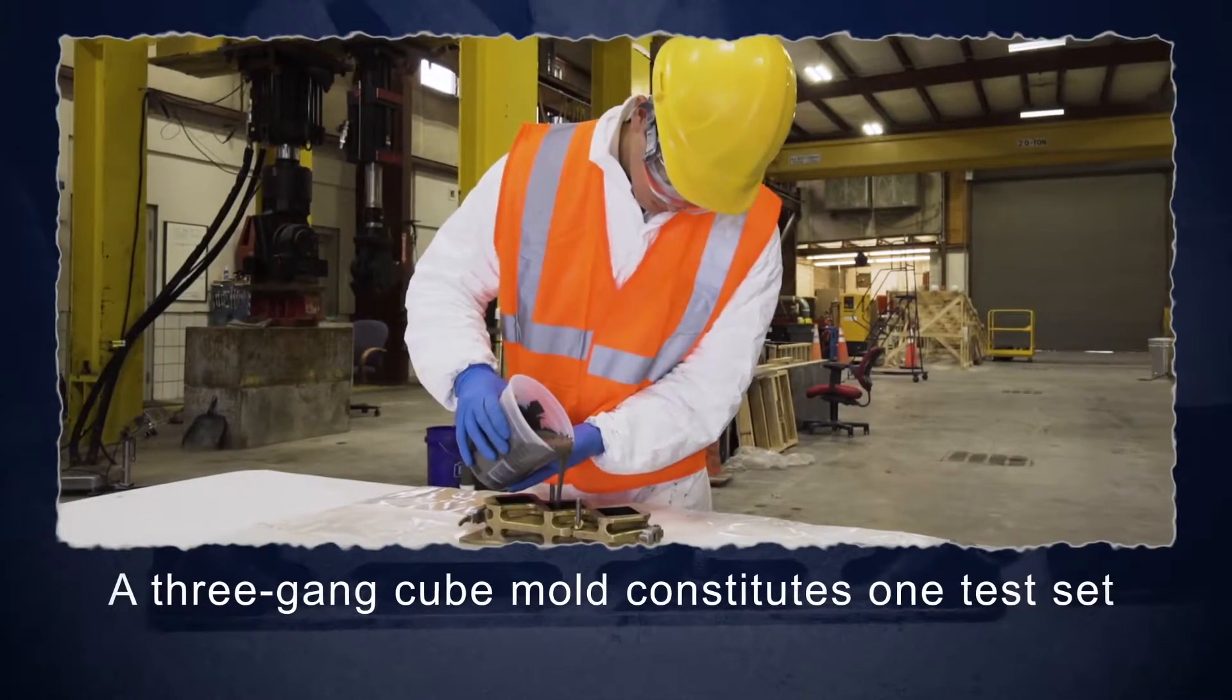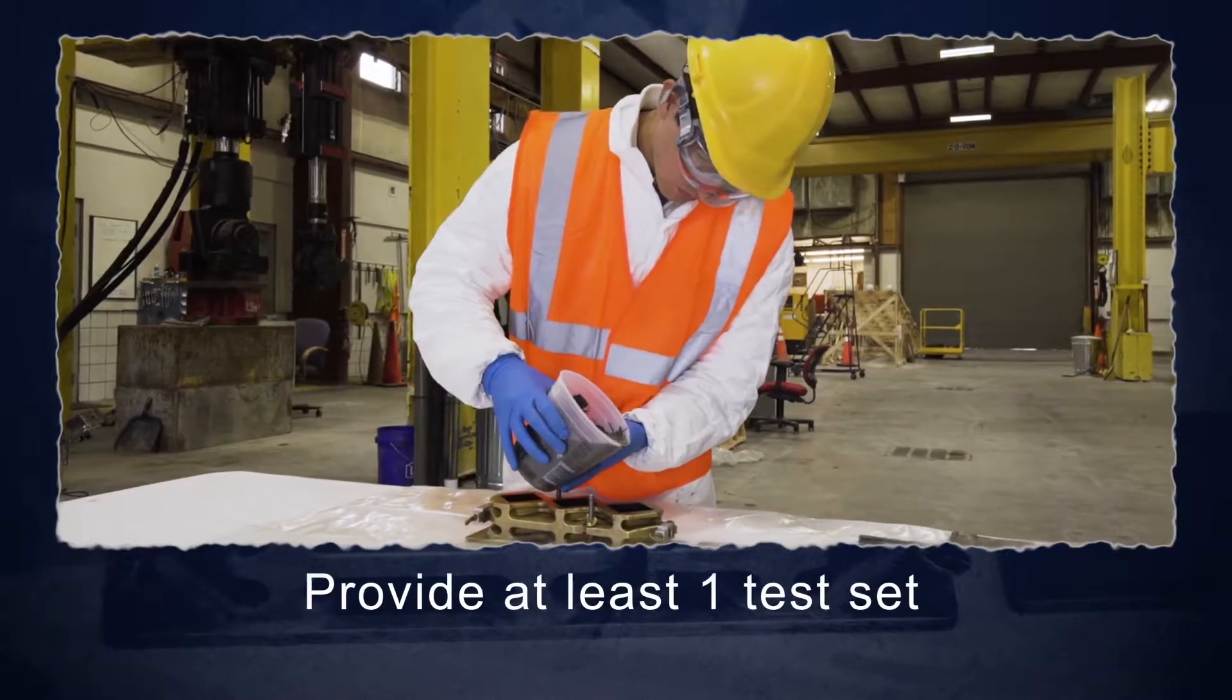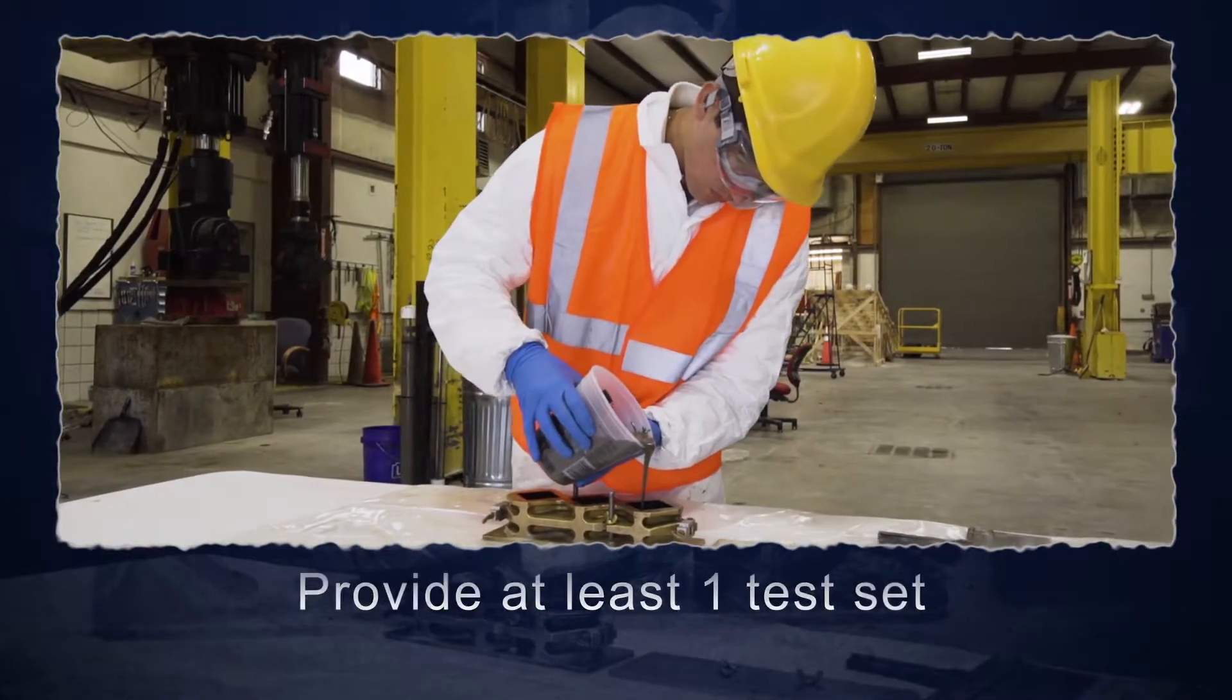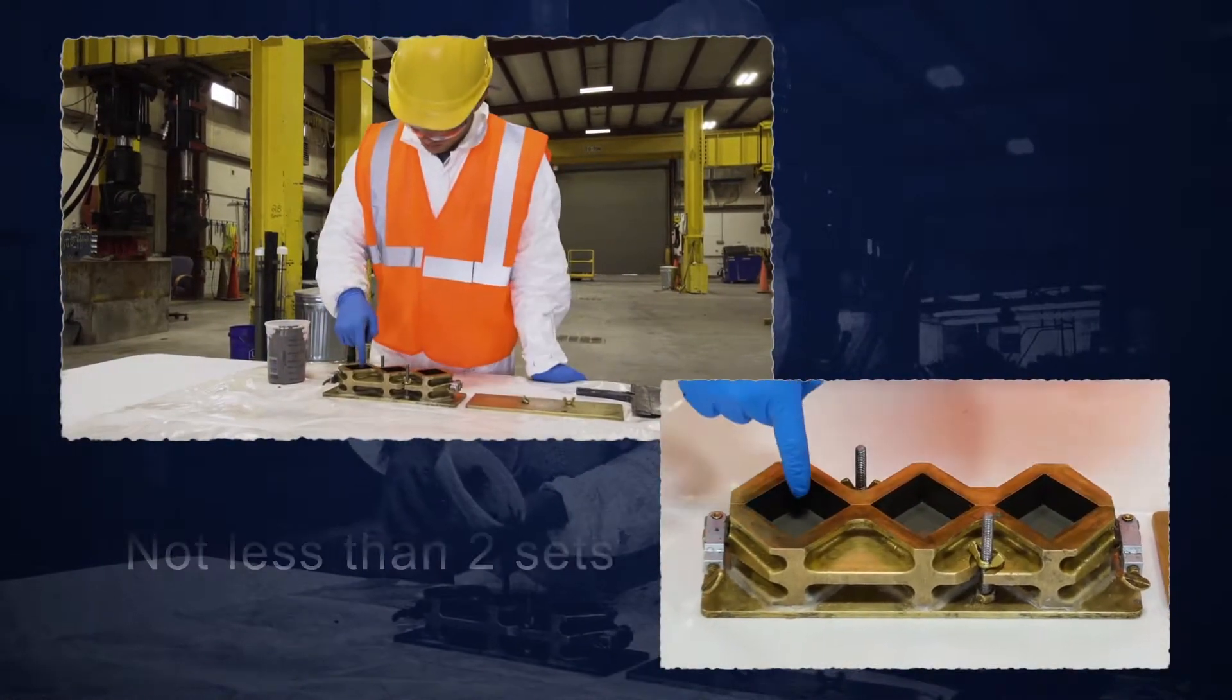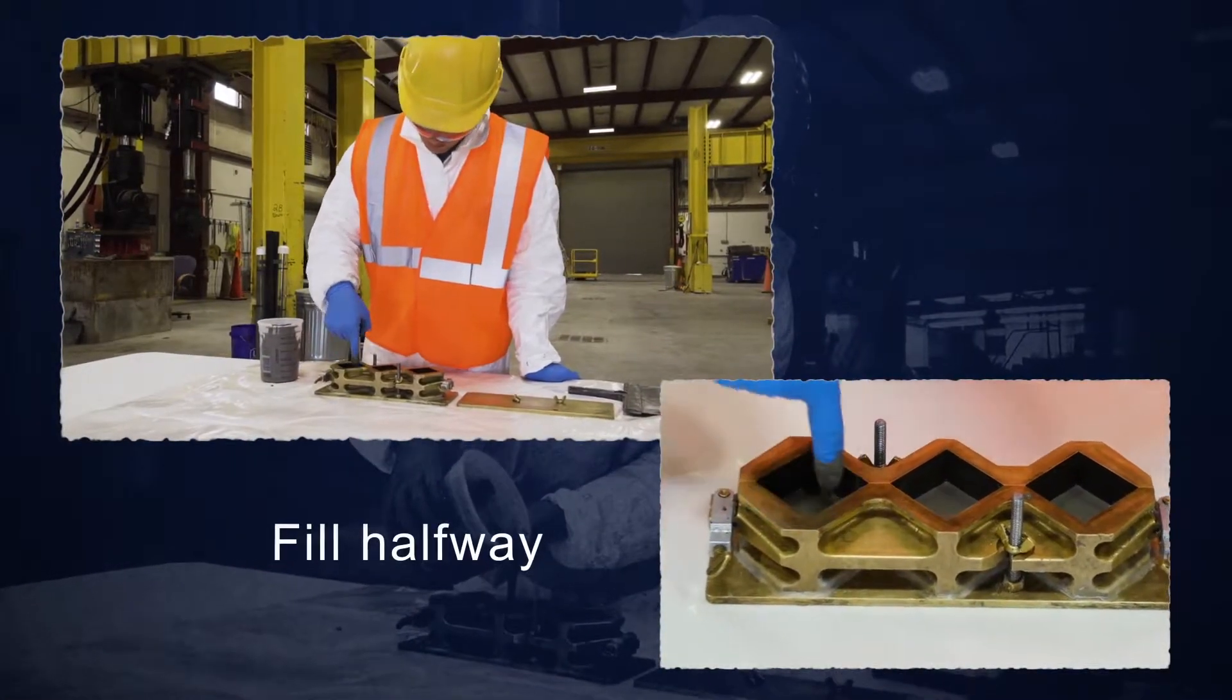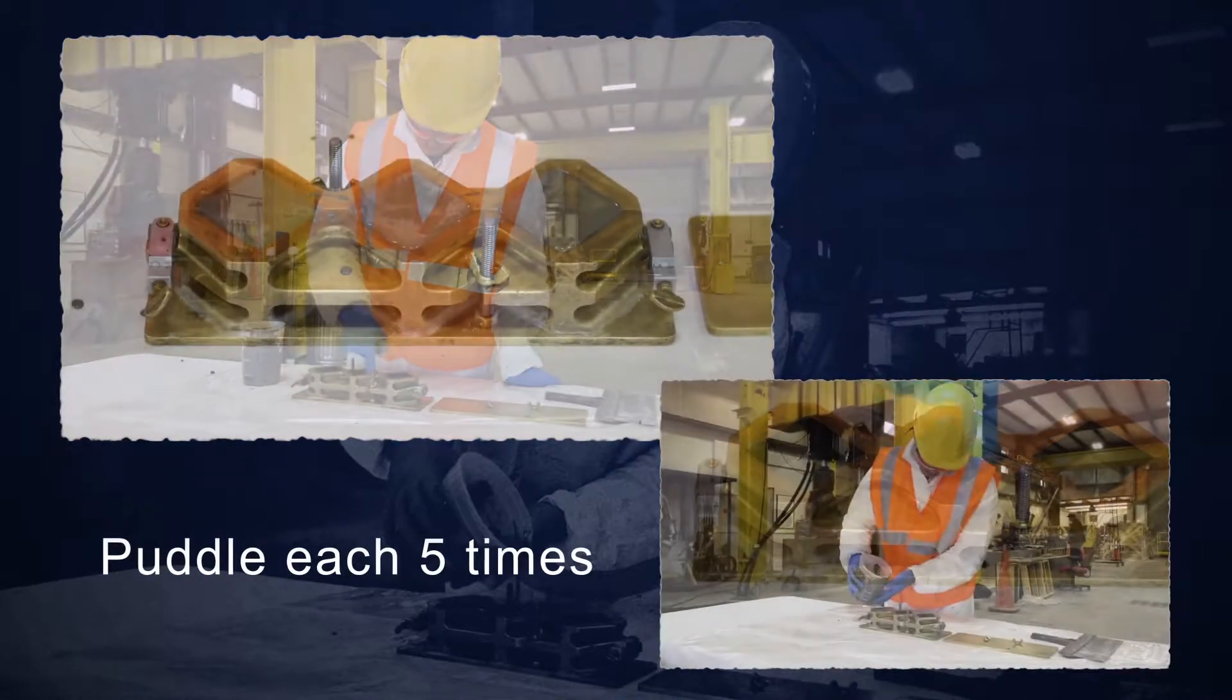A 3-gang cube mold constitutes one test set. Provide at least one test set for each age at which strength is to be determined, but not less than two sets. Fill each mold in the set halfway. Puddle each with a gloved finger five times to release entrapped air.